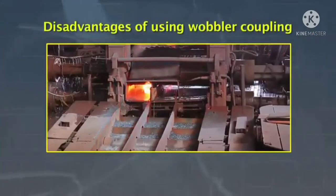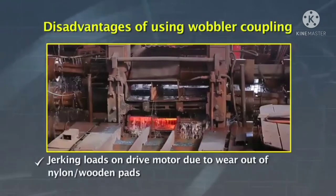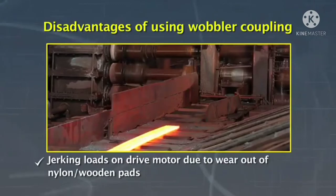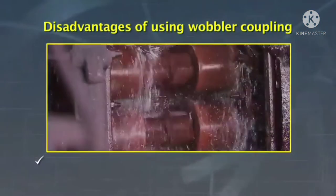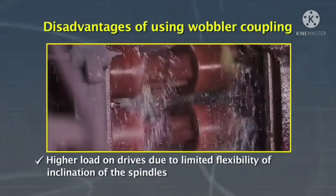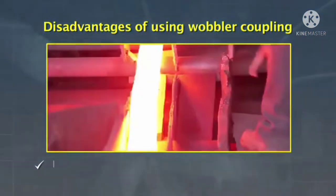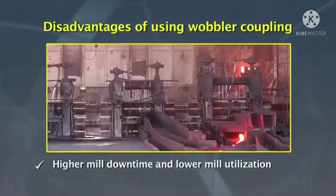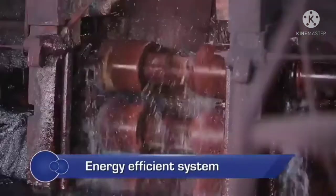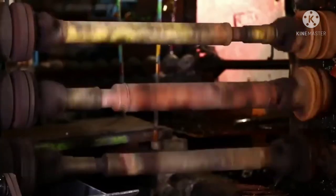The disadvantages of using wobbler couplings make them inefficient. As an alternative to the wobbler couplings and spindles, the energy efficient way is to use universal couplings and spindles.